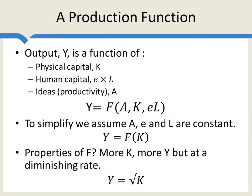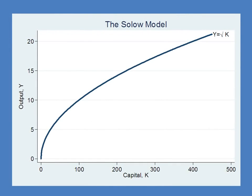For example, if there are 16 units of capital, then output is 4. Here is our production function, with capital along the horizontal axis and output along the vertical axis. At a capital stock of 100, you get an output of 10 — the square root of that. At a capital stock of 400, you get an output of 20.